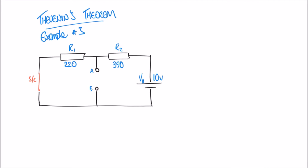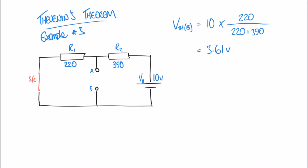We're going to set up our potential divider rule to take that into account. The Thevenin voltage for power supply B, VTH(B), is equal to the supply voltage 10, multiplied by a fraction. On the top of that fraction, I'm measuring across R1, so 220 goes on the top. On the bottom, both resistors added together: 220 plus 390. When I work this out, I get a result of 3.61 volts.